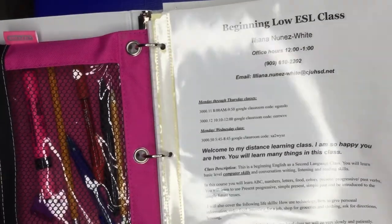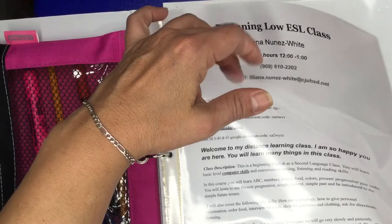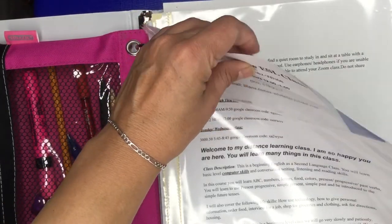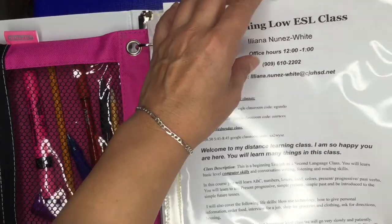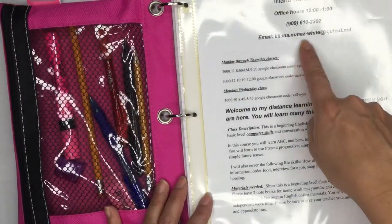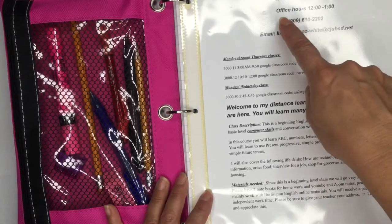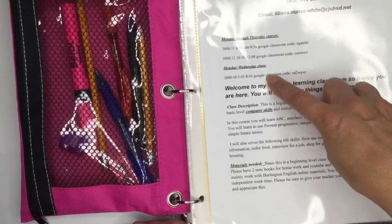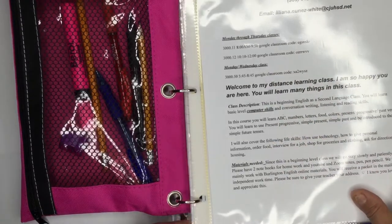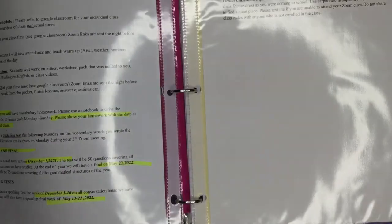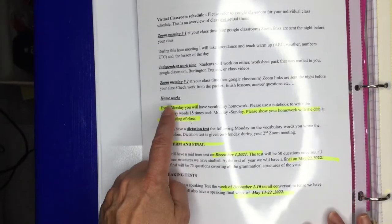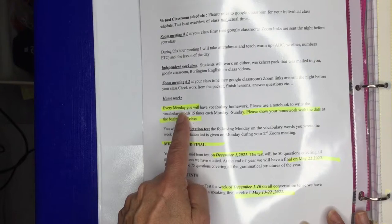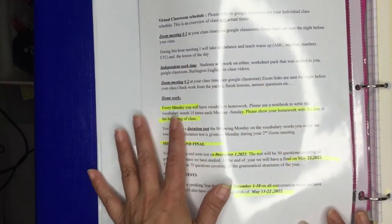The first thing I put in the organizers, in the clear sheet protectors, is my syllabus. Because the syllabus has my teacher's email and phone number, the hours that she's available. Also, I have my schedule for my class and any important dates. Like, for example, I want to know if I have homework. Well, here I have homework every Monday. What is it? Vocabulary. So the syllabus goes in the front; it's very important.